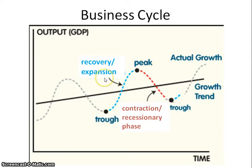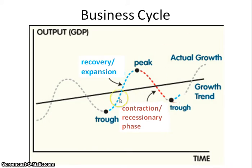The first phase is the recovery or expansion phase. With this, GDP is rising — it has gone up. It doesn't mean that the percentage it goes up from one month to the next, or every three months, increases at an increasing rate. It just means that GDP continues to go up and grow — it gets larger and larger. So this is the recovery and expansion phase.